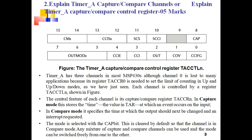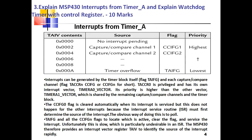You can switch freely from one mode to another. The next question is: explain MSP430 interrupts from Timer A and explain the watchdog timer with control registers, asked for 10 marks. All the interrupts from Timer A are listed here with their interrupt vector locations, names, flags, and priorities. Interrupts can be generated for the timer block itself and each capture and compare channel using CCIFG0 and CCIFG1. Timer A0 vector has higher priority than the Timer A1 vector, which is shared by the remaining capture and compare channels.